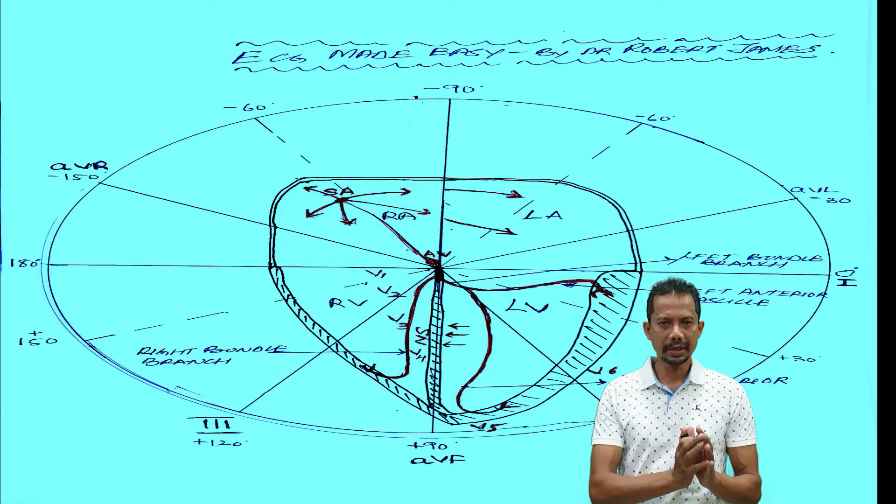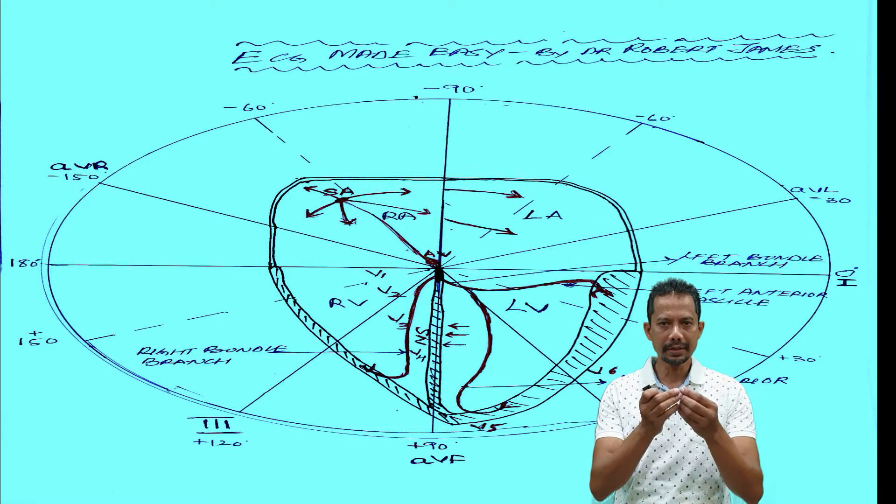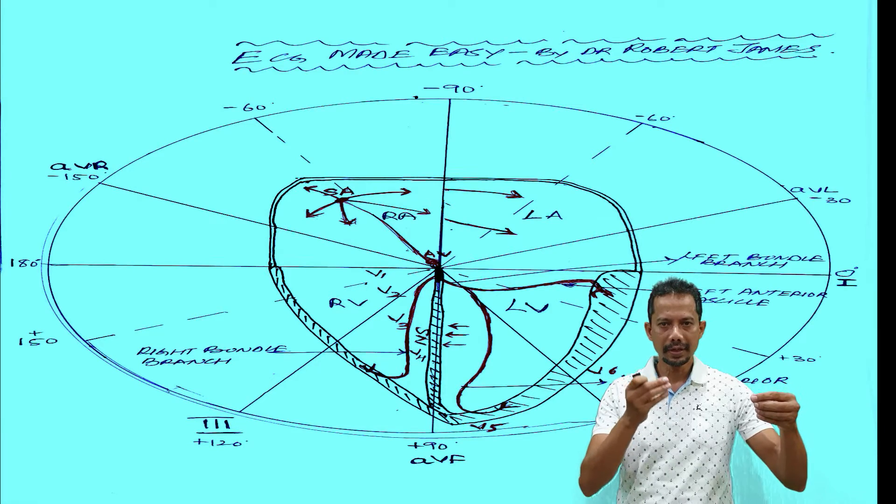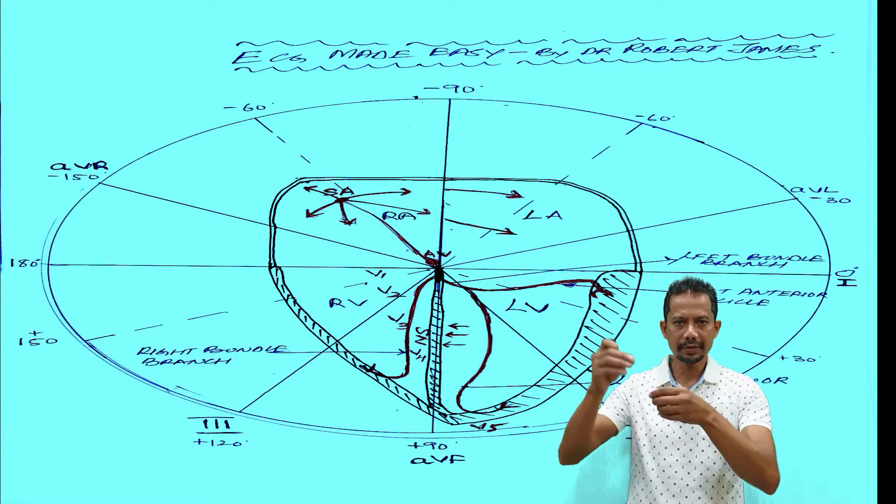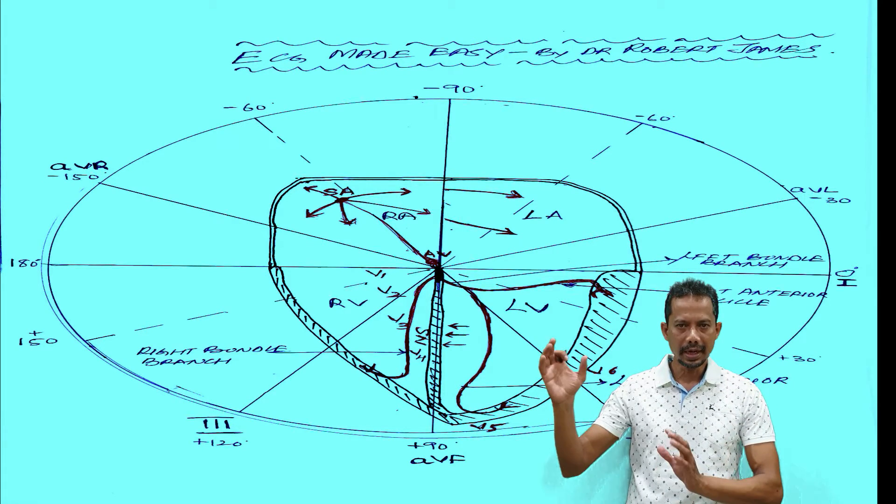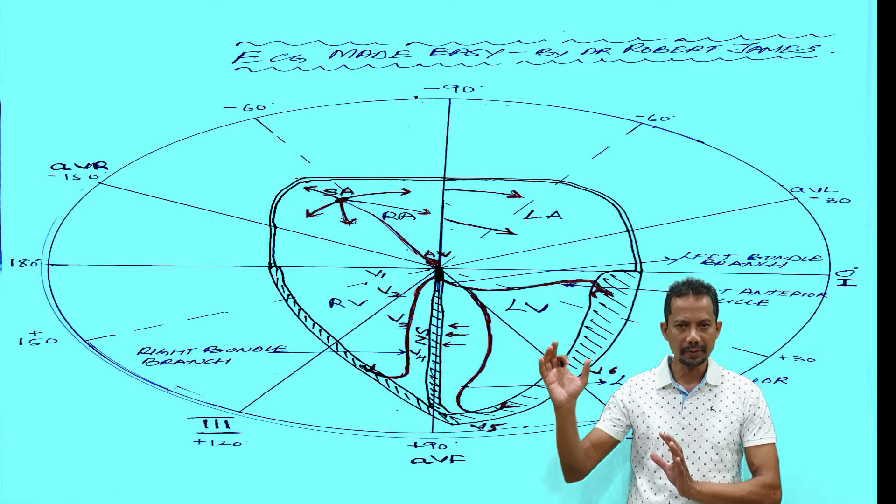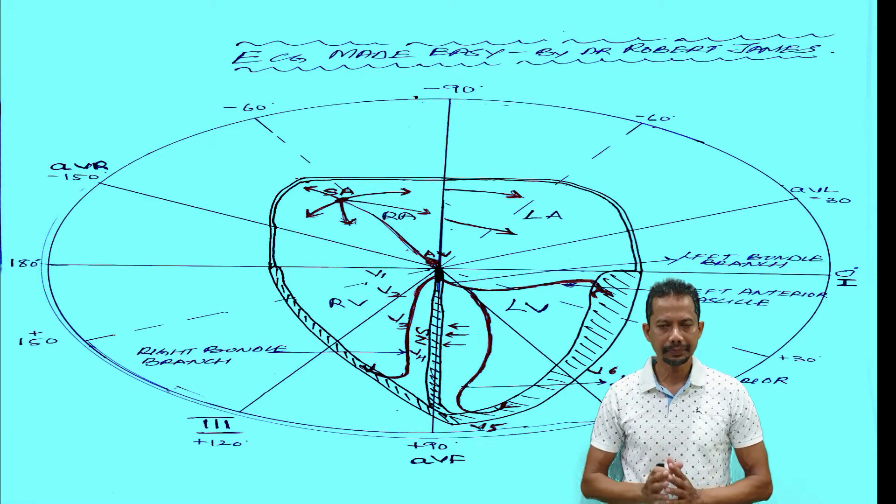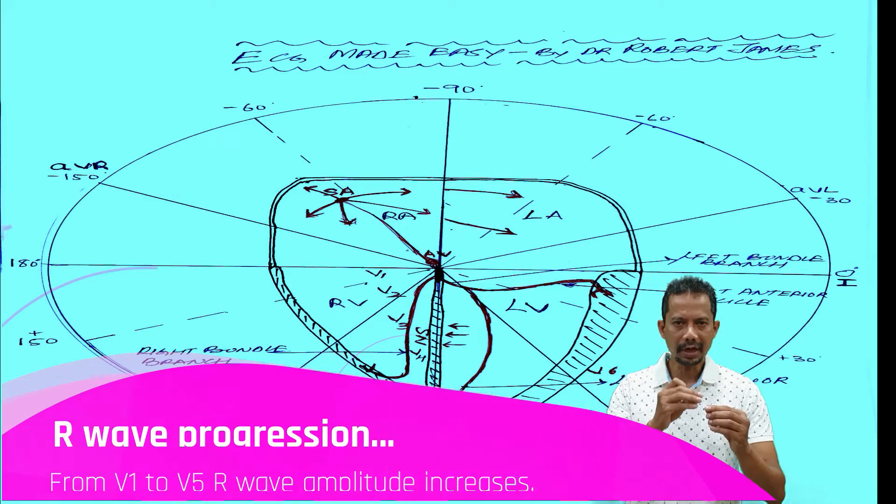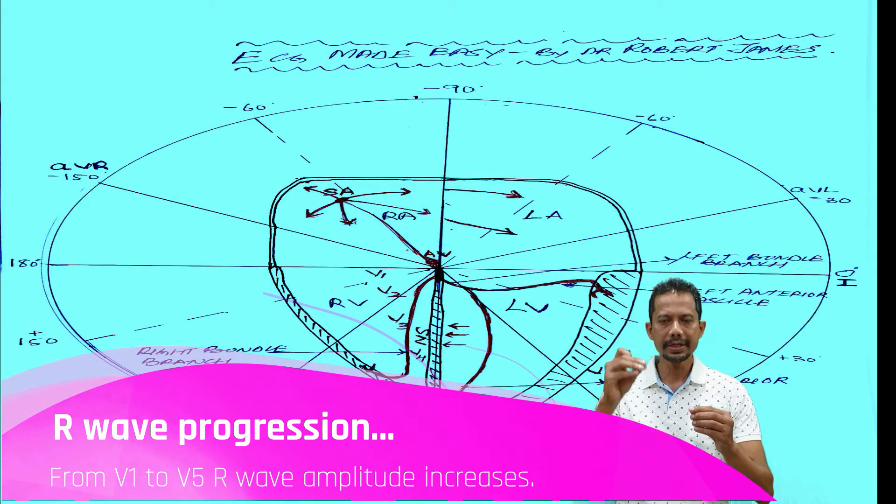Welcome back. As the impulse depolarizes the interventricular septum, then it spreads where the right bundle branch depolarizes right ventricle. Left bundle branch divides into left anterior fascicle superior laterally, left posterior fascicle inferior medially. These two fascicles depolarize the left ventricle and slowly the amplitude of the R wave keeps on increasing.